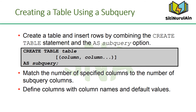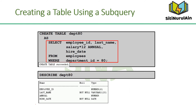A second method for creating a table is to use the AS subquery clause, which both creates the table and inserts rows returned from the subquery. The table is created with the specified column names, and the rows retrieved by the SELECT statement are inserted. The column definition can contain only the column name and default value. If no column specifications are given, the column names are the same as in the subquery. The example creates a table named DEPT80 containing details of all employees working in department 80, with data sourced from the EMPLOYEES table. Be sure to provide a column alias when selecting an expression — for example, SALARY * 12 is given the alias ANNSAL.